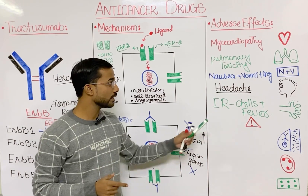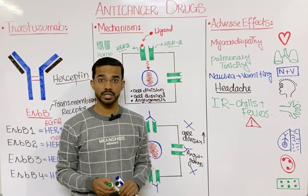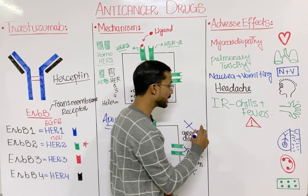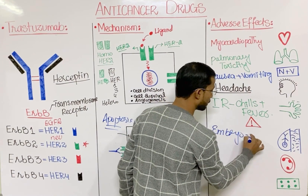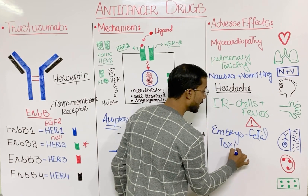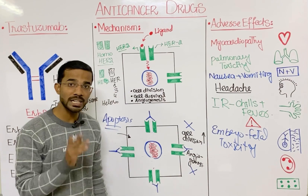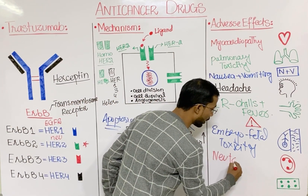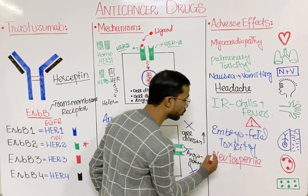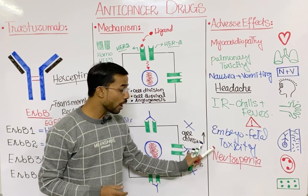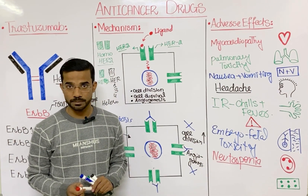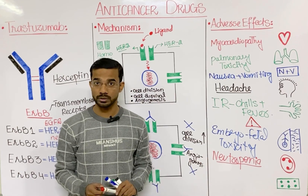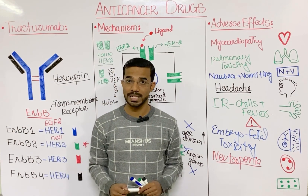Important precautions: please do not take trastuzumab during pregnancy, because it will cause embryo-fetal toxicity, which is dangerous for the baby. Trastuzumab is prohibited in pregnancy. Additionally, neutropenia can occur after taking trastuzumab — a low neutrophil count, which can lead to infections. Always check the neutrophil count using a CBC, as trastuzumab can lower the neutrophil count.